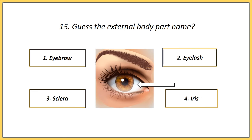Fifteenth one. Guess the external body part name. Options: eyebrow, eyelash, sclera, wrist. Answer is sclera.